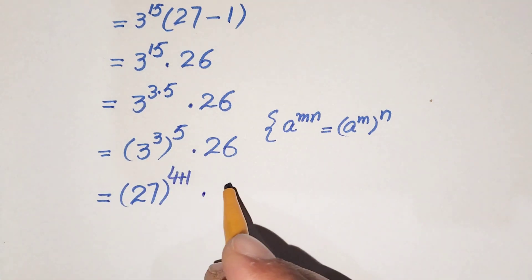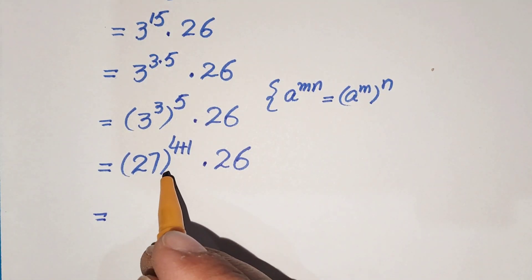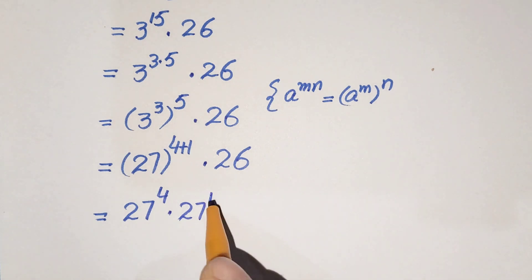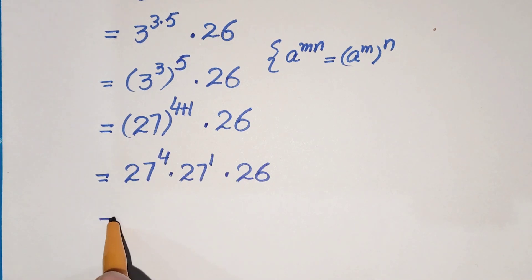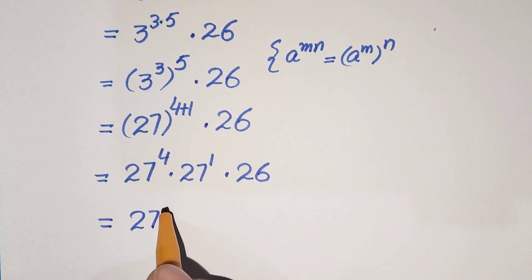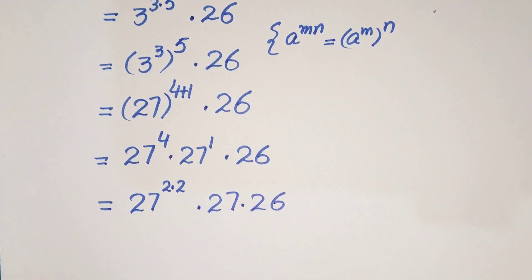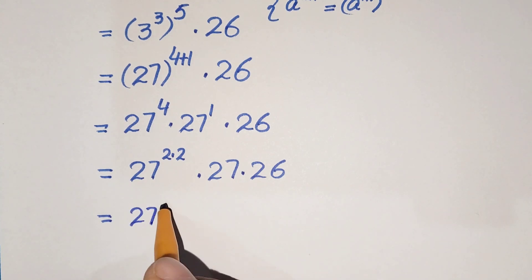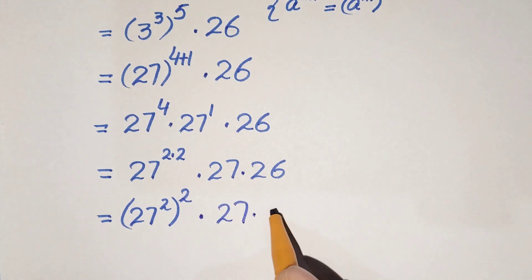Since 4 plus 1 equals 5, we have 27 to the power 4 times 27 to the power 1, times 26. Now 27 raised to the power 4 can be written as 27 to the power 2 times 2, which equals 4. So 27 to the 4th is (27 squared) whole squared, again using the exponential law as previously, times 27 times 26.